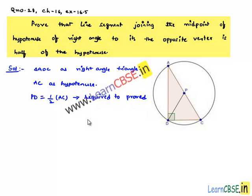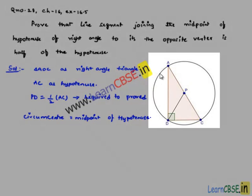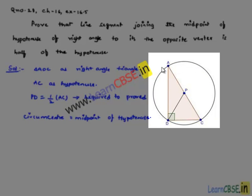Now, we know that in a right angle triangle, the circumcenter is equal to the midpoint of the hypotenuse. Therefore, draw a circle circumscribing the triangle ADC.